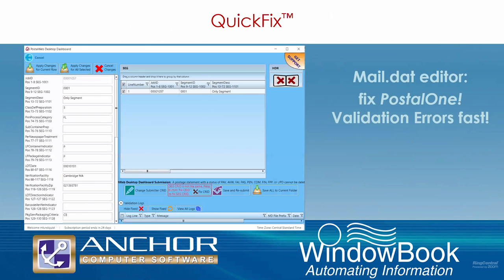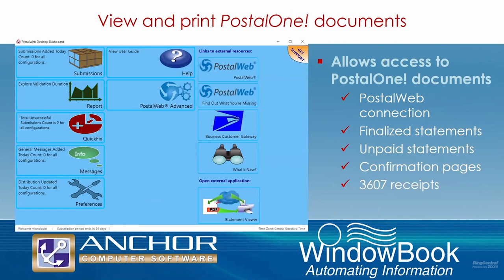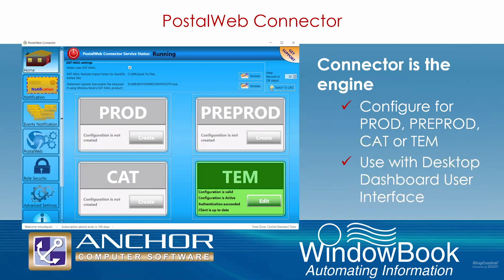Postal Web's desktop dashboard has an integrated QuickFix function, which is a mini mail.dat editor. This allows you to fix validation errors right from the Postal 1 desktop dashboard and resubmit files to Postal 1 quickly and hassle-free. QuickFix lets you look at validation logs to fix validation errors more easily — it shows exactly which files within the mail.dat file need to be fixed and lists the fields that need editing. The solution also provides easy access to your Postal 1 documents: you can view finalized and unpaid statements, your 3607 mailing receipts, and barcoded confirmation pages, and print them, email them, save them as PDFs, or set them to be automatically printed at a time you specify.